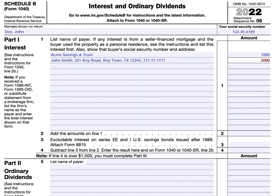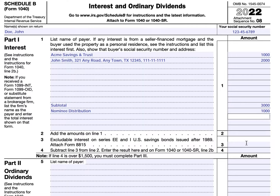If you're a nominee, this means you received interest that actually belonged to someone else. You would report it in line one, but then under your last line one entry you would put a subtotal of all interest. Below that you would enter 'nominee distribution' and show the interest you received as a nominee, then subtract that amount. For example, you'd have a subtotal of $3,000, then report 'nominee distribution' for ACME Savings and Trust and subtract it, ending up with $2,000 in line two. If you didn't put the subtotal and nominee distribution, you'd have to combine all items and it would be $3,000 instead.